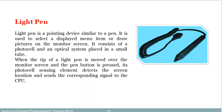The light pen is used for cursor positioning and to select a displayed menu item or draw pictures on the monitor screen. If you have a diagram or need to input directly to the screen, you can use a light pen. It consists of a photo cell and an optical system placed in a small tube. When the tip of the light pen is moved over the monitor screen and the button is pressed, the photo cell detects the location and sends a corresponding signal to the CPU.